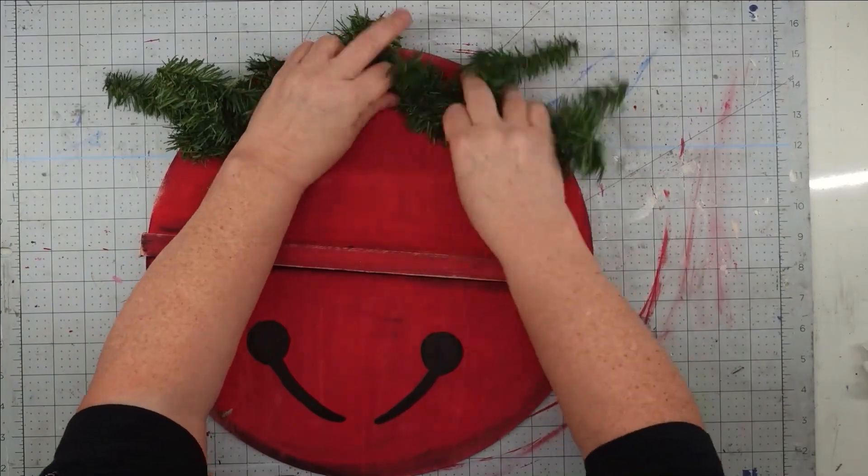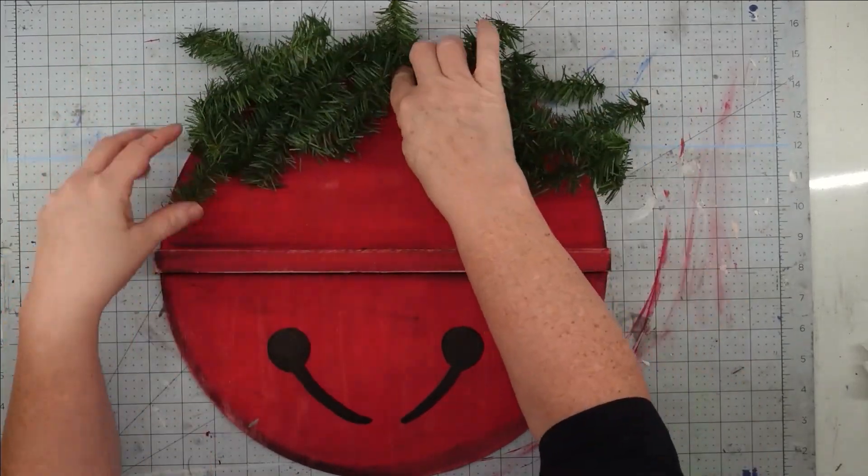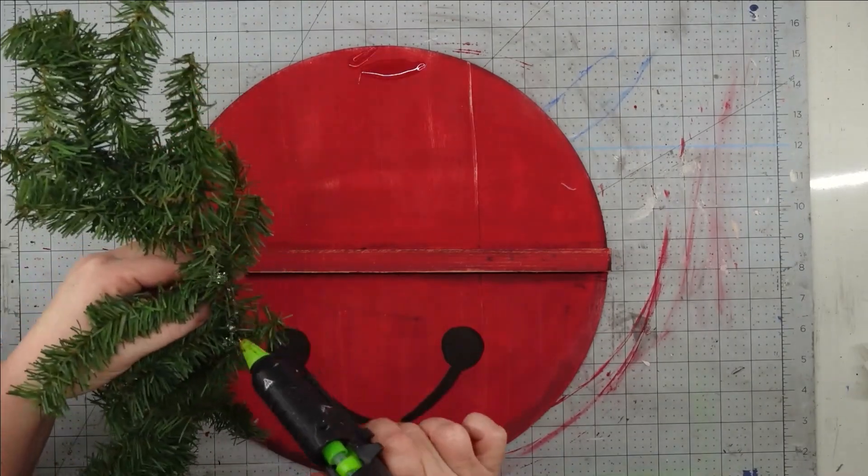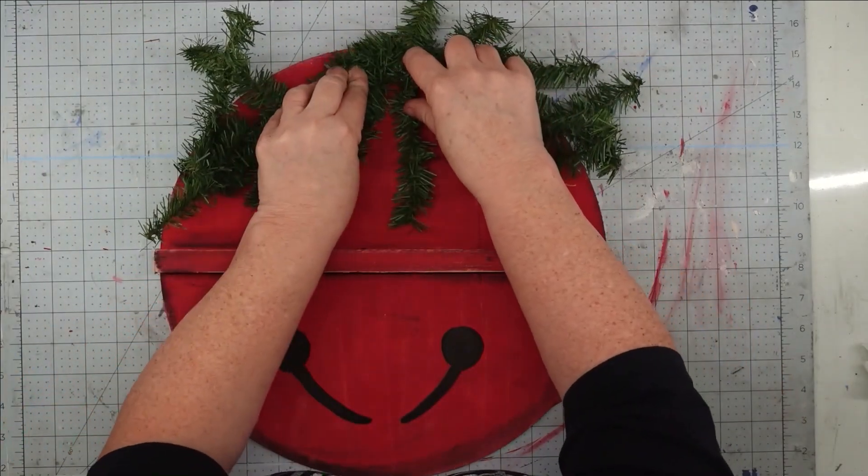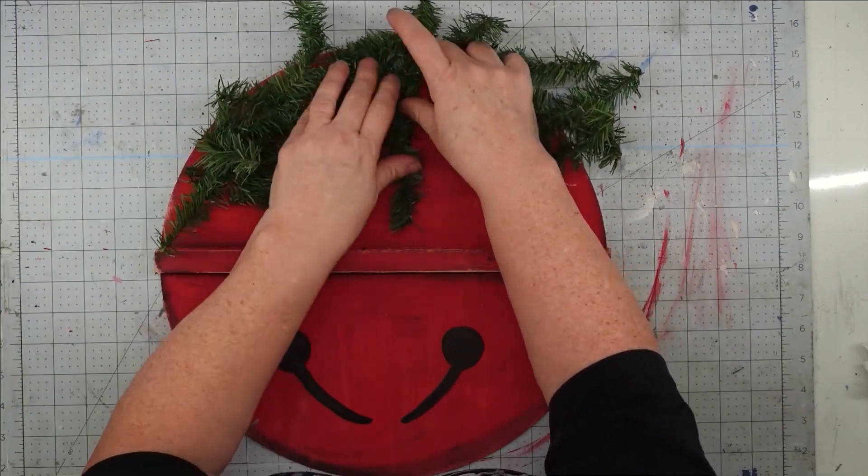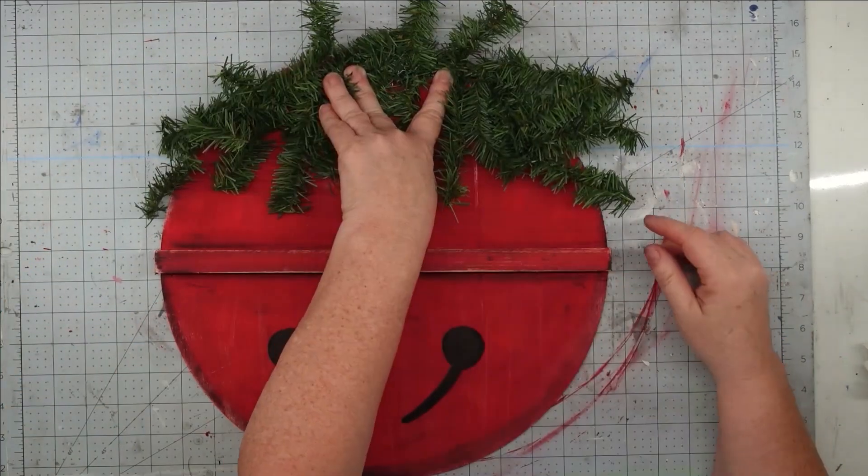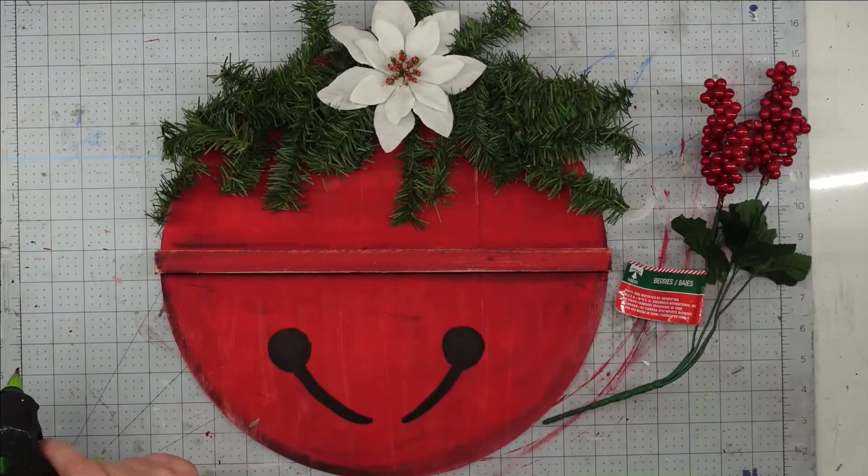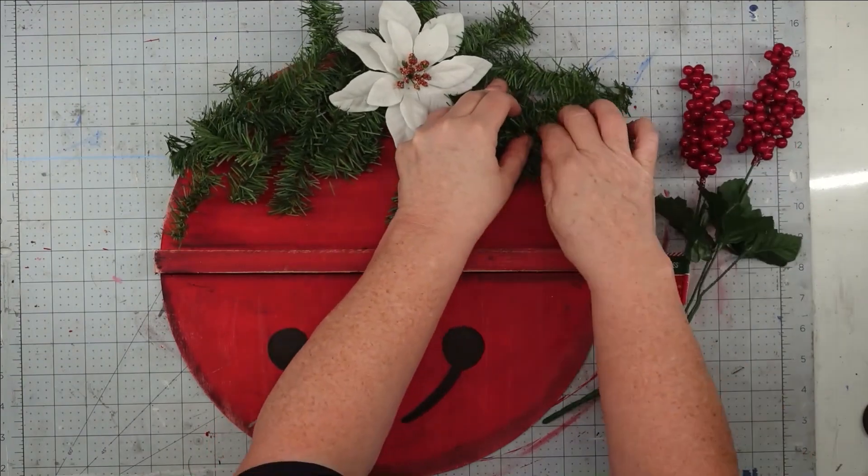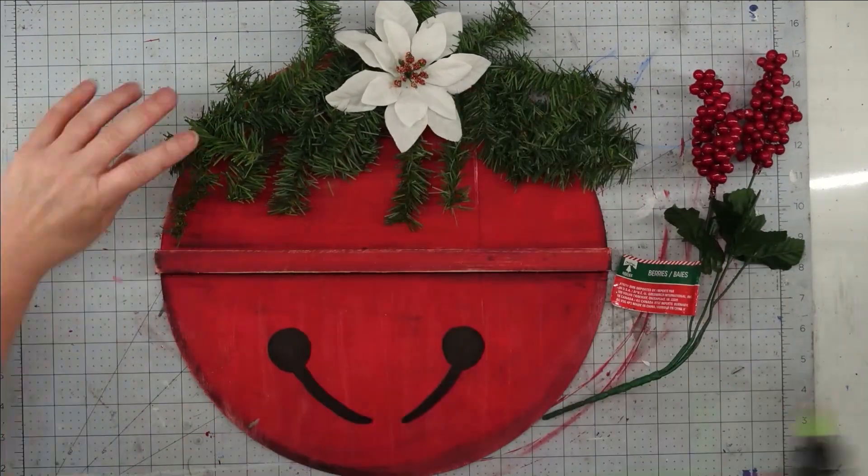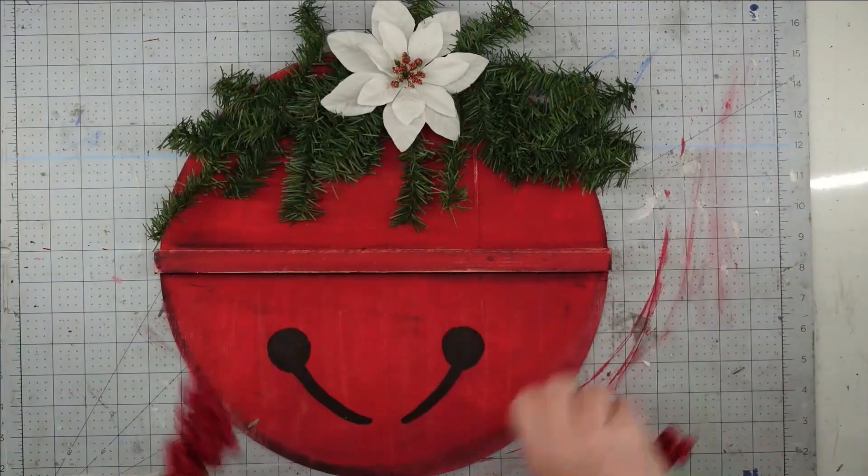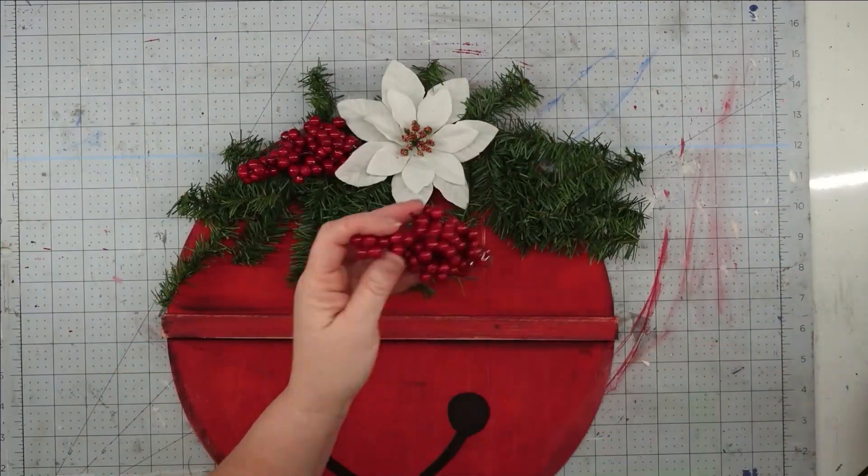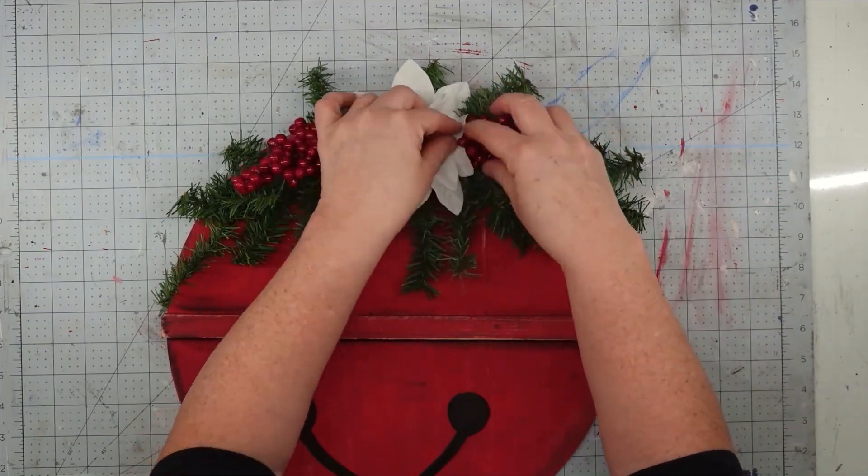Now the last thing we need to do is decorate the top of this. I grabbed some of this garland that I had left over from last year. I got this from Walmart. I like cutting pieces off and using it, and I did use some of my super glue Fix All adhesive just to make sure that this was going to stay in place. Once I got that glued down, I used this white poinsettia right in the middle, and then I'm going to also put a little bit of hot glue on these edges just to make sure that this doesn't pop off. The last thing I'm going to do is add some of these red berries to each side, and once we get those glued down, this project will be complete.